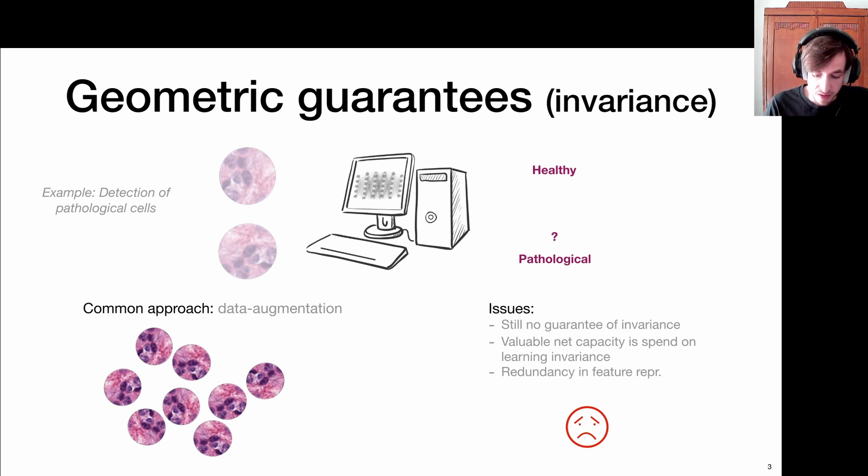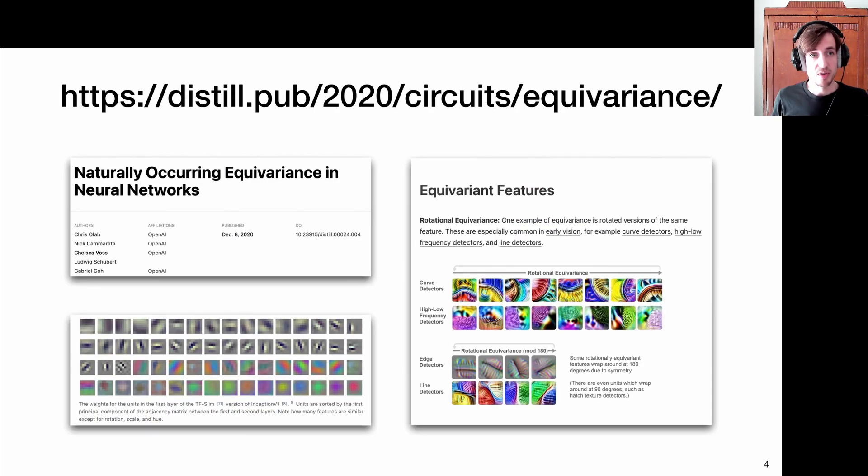Another motivation is that we actually now let the neural network learn how to deal with these geometric properties, which are actually quite well understood. That is the whole purpose of group convolutional networks, to bake these geometric constraints into the neural network such that we have guarantees, but also such that we can be more efficient in parameters. A lot of capacity is lost on learning equivariance. We actually see that by looking at the redundancy in these feature representations.